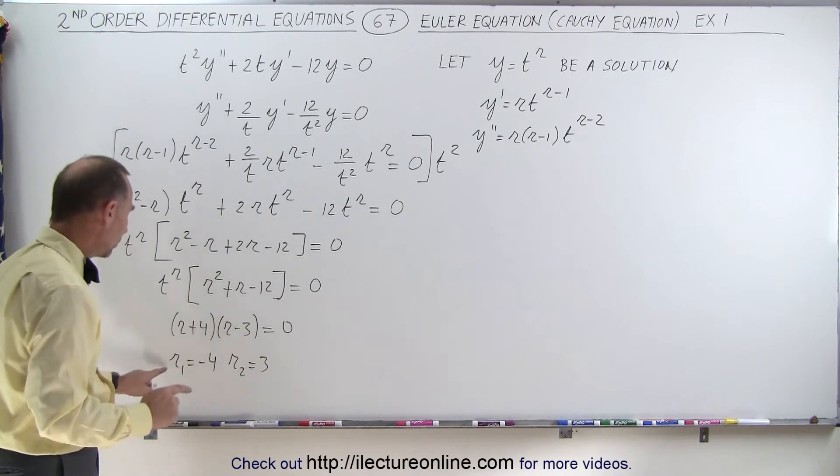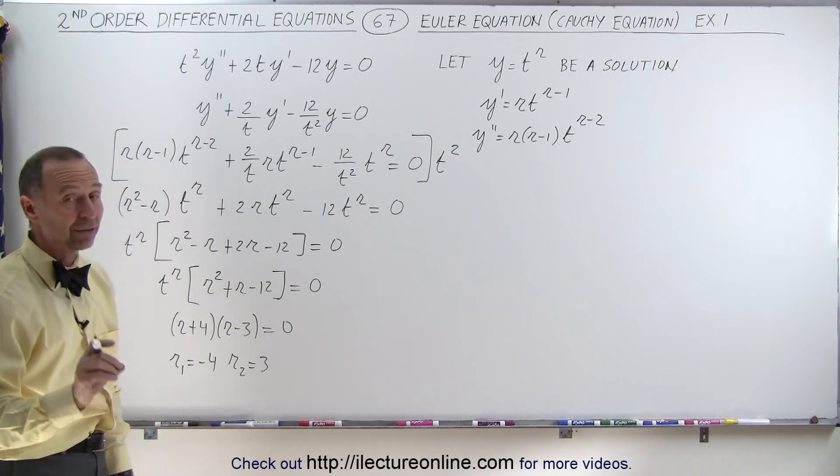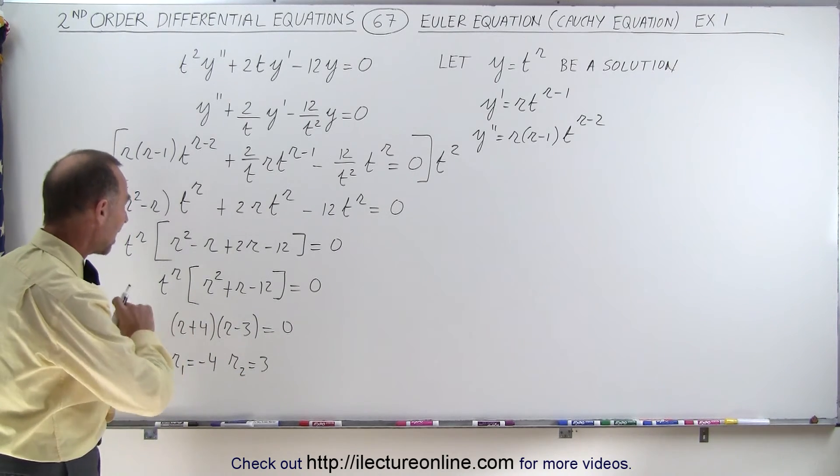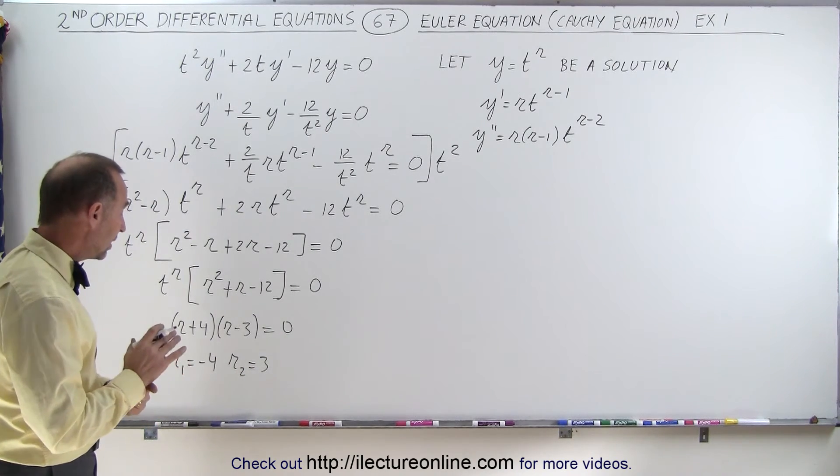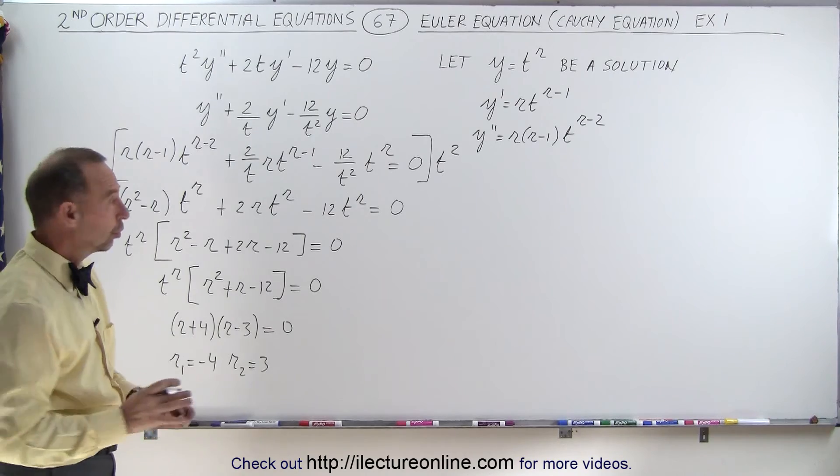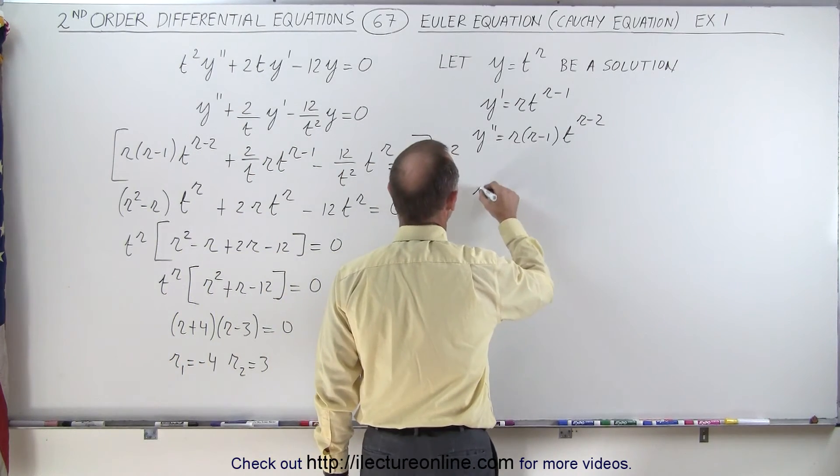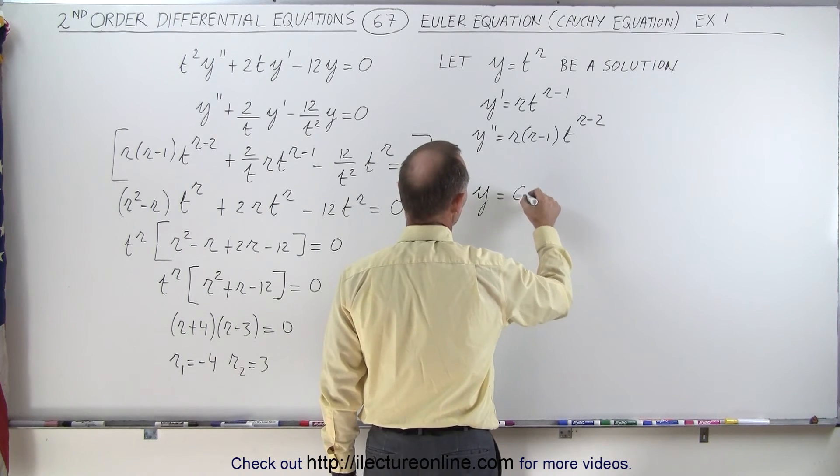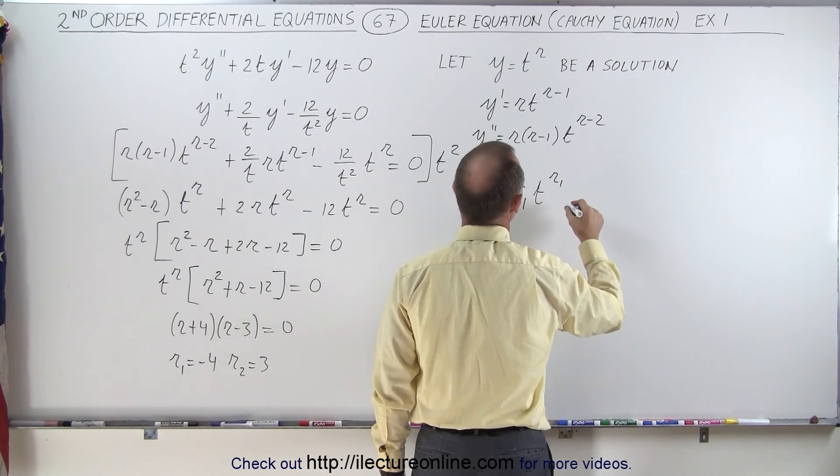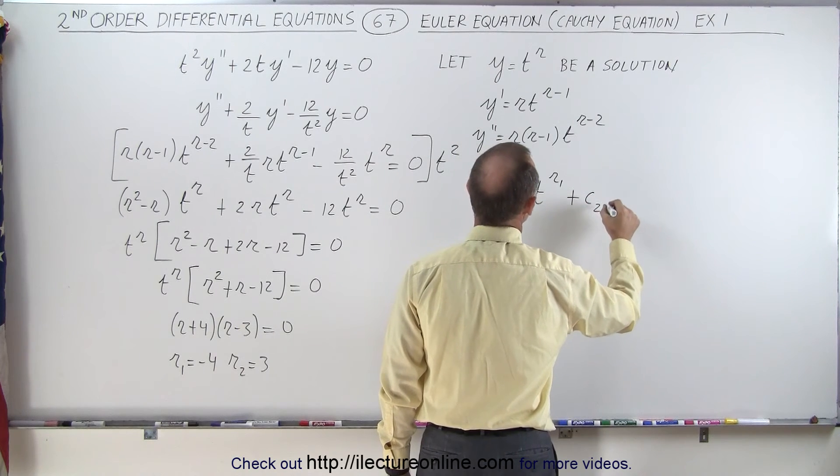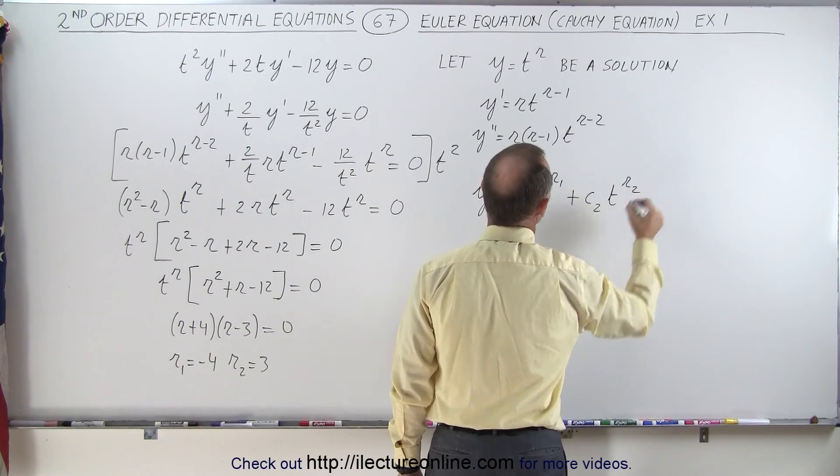So in this case, we do have one of the roots being negative and one of them being positive, and we have to be careful when we're dealing with the natural log here. But since they're both real roots, we know that the solution to the homogeneous part of the equation will look as follows. We know that y is going to be equal to c₁ times t^r₁ plus c₂ times t^r₂.